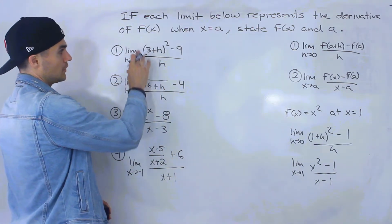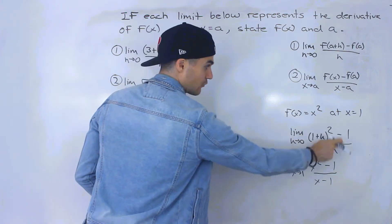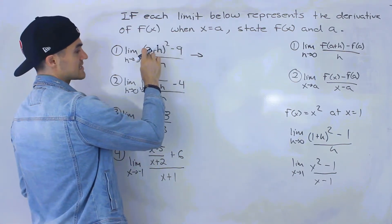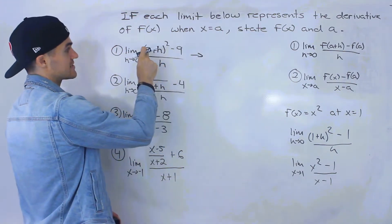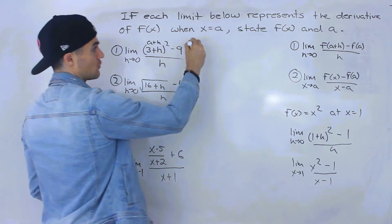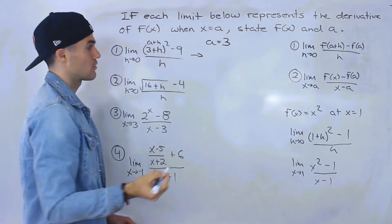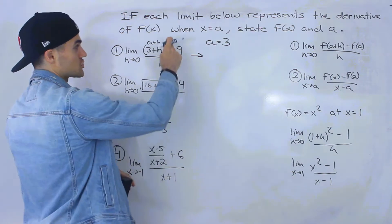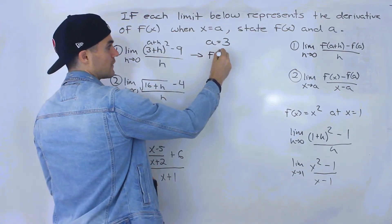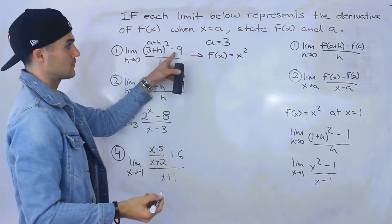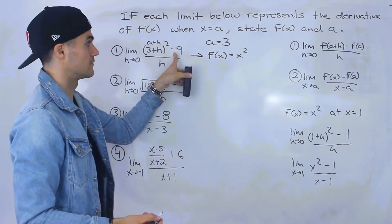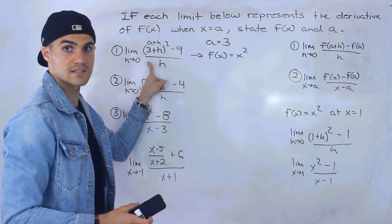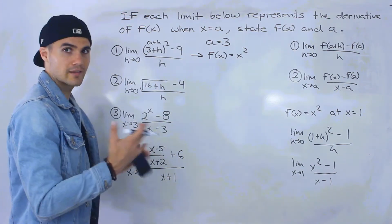So for the first limit, notice it's in the format f(a+h) minus f(a) all over h, and we have 3+h here. So this is like the a+h part, meaning the a value is 3. Since a is 3, notice we're taking the expression (3+h) and squaring it, so we can tell the function is f(x) = x². And f(a) = f(3) = 3² = 9, which matches the minus 9 in the limit. Sometimes it takes a little trial and error to figure it out.